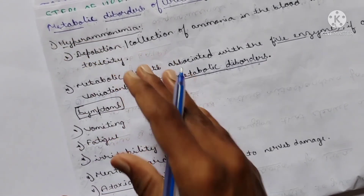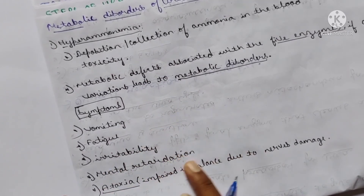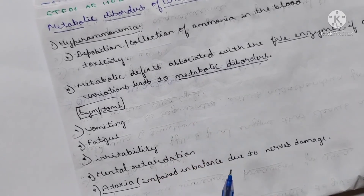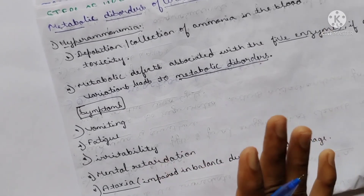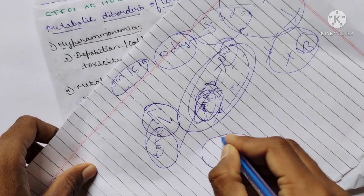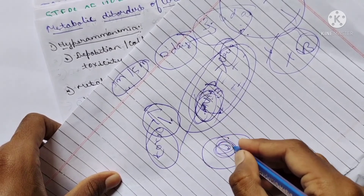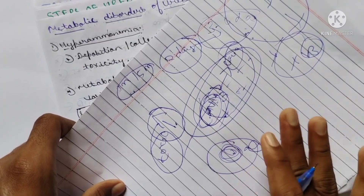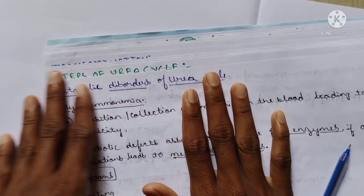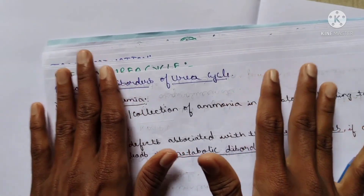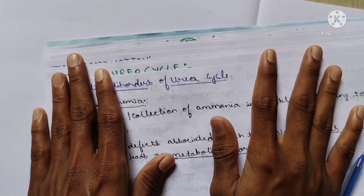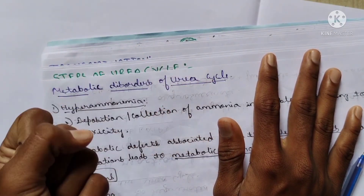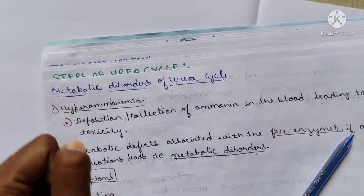Clinical symptoms of hyperammonemia include vomiting, fatigue, irritability, mental retardation, and ataxia. Ataxia means impaired balance due to brain, nervous, or muscle damage - when there is damage to the nervous system in the brain it leads to ataxia. This completes the whole urea cycle topic. Please subscribe to the channel Legend Pharmacy and share with your friends. Thank you, assalamu alaikum.